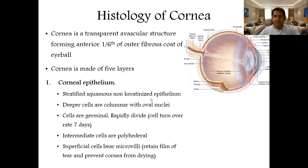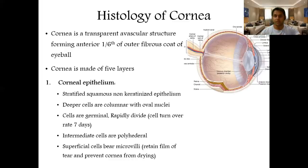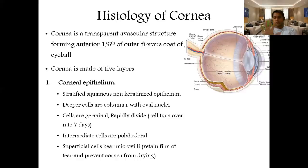Now let us look at the histology of the cornea. The cornea is transparent and avascular — being avascular means it is not supplied by any blood vessel, so nutrition comes from surrounding capillaries or from the aqueous humor. The cornea covers the anterior one-sixth of the outer fibrous coat of the eyeball and has five layers histologically.